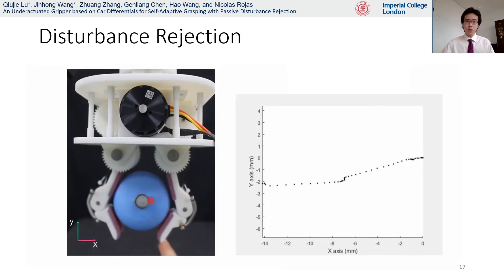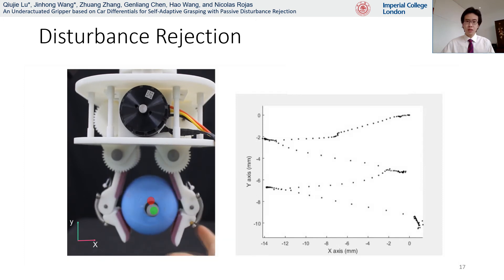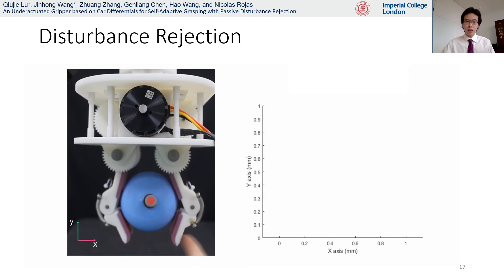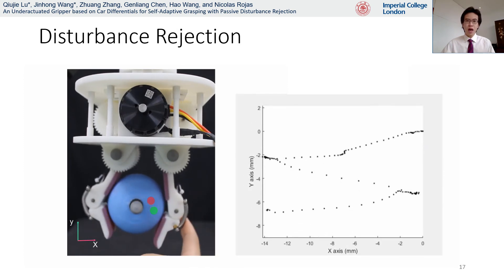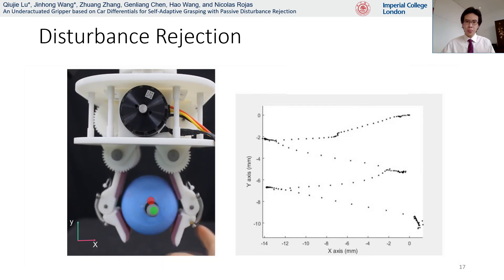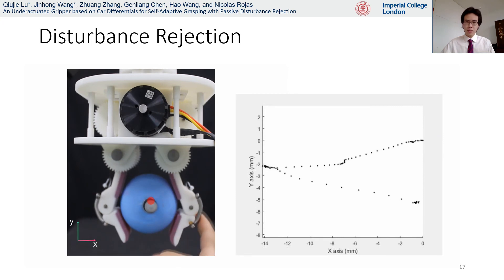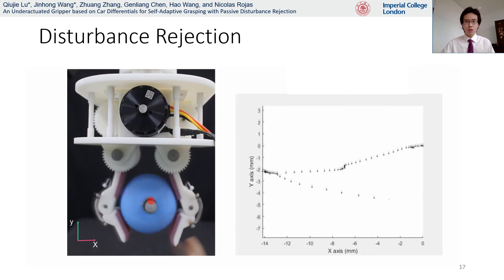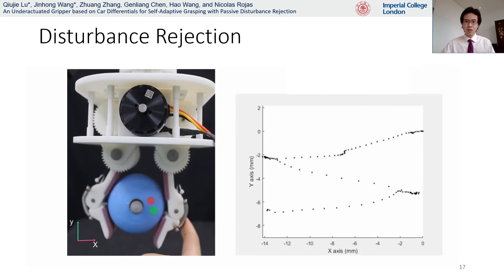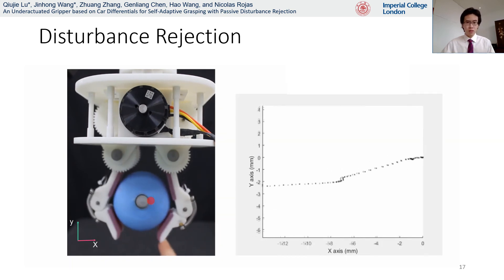As for the disturbance rejection experiment, the same 70 mm sphere was firstly grasped by the gripper, and an external force was exerted on the fingers as a disturbance. After the force was removed, the finger moved back to the initial position. A tracking marker was placed at the center of the object to test the effects of the mechanism. As you can see, although the grasped object slipped downwards due to gravity, the position of the object remains more or less the same.